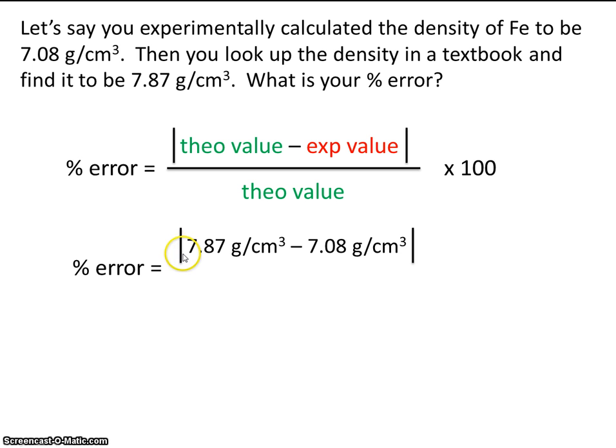So the theoretical value, remember, is 7.87. The value you got is 7.08. And we'll divide that by the theoretical value and multiply everything by 100. So your percent error is 10%. And that makes sense.